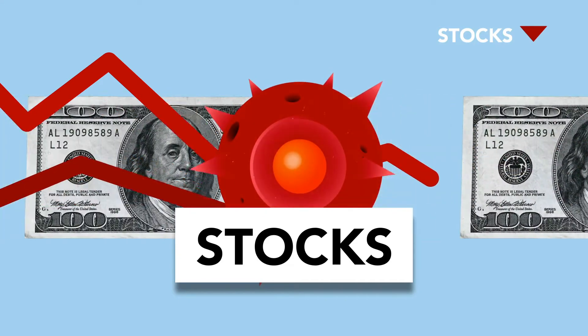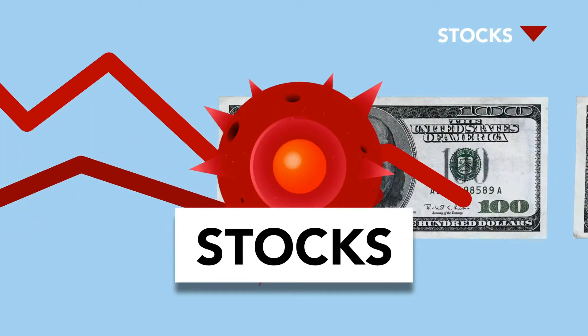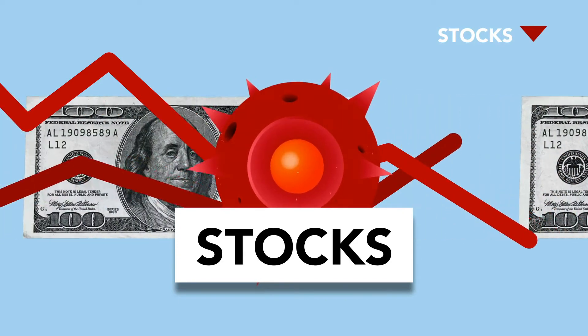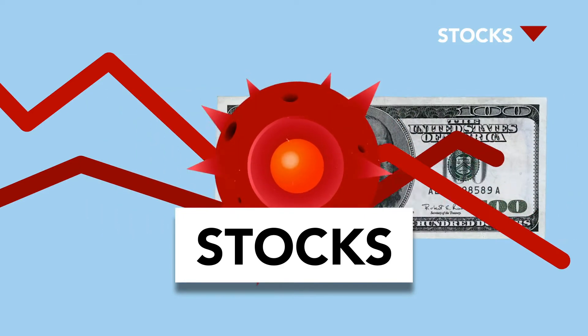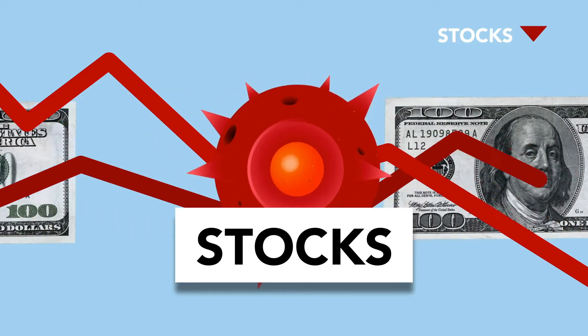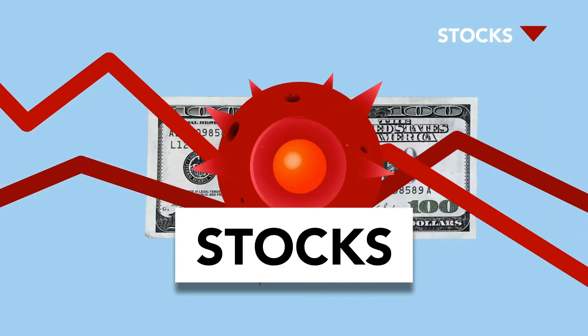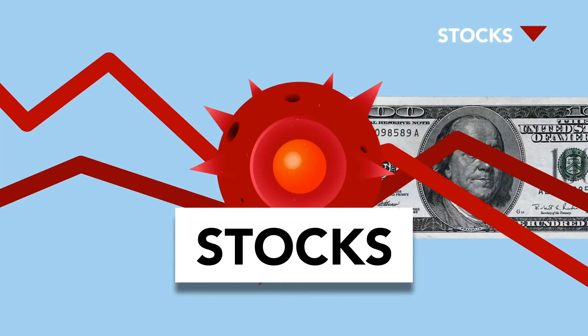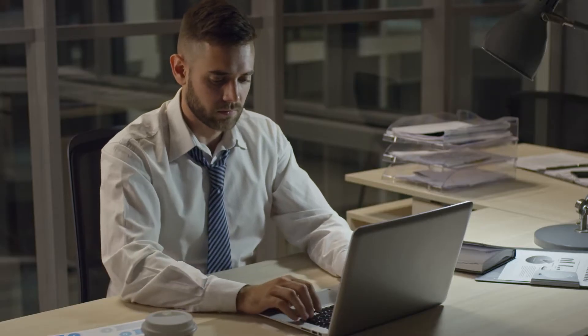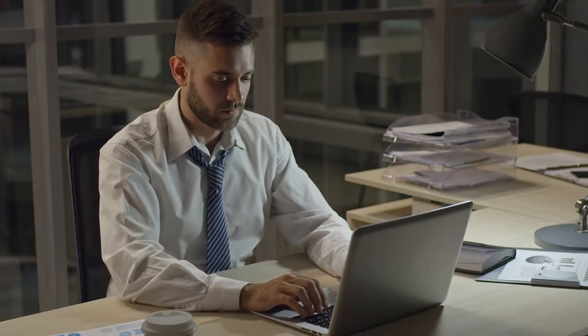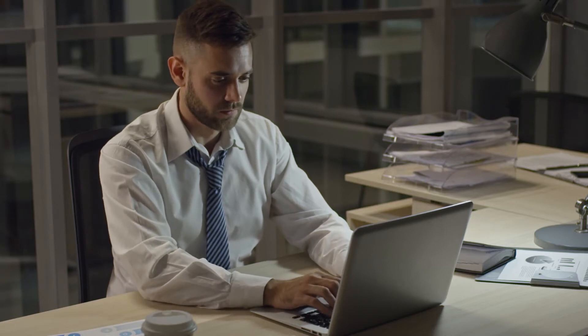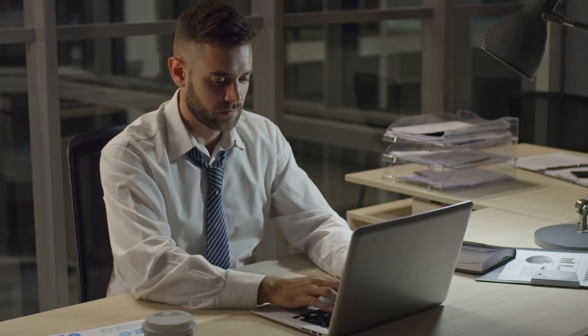There are two types of financial markets: the money market and the capital market. The money market is a market in which securities with a maturity of less than one year are traded, whereas capital markets are those markets in which securities with a maturity of more than one year are traded.